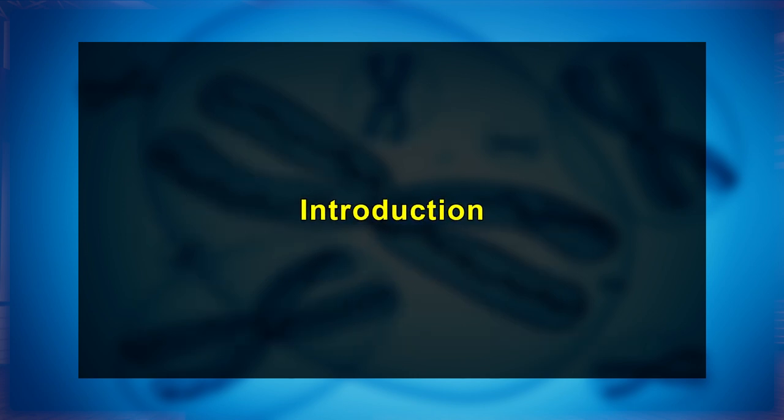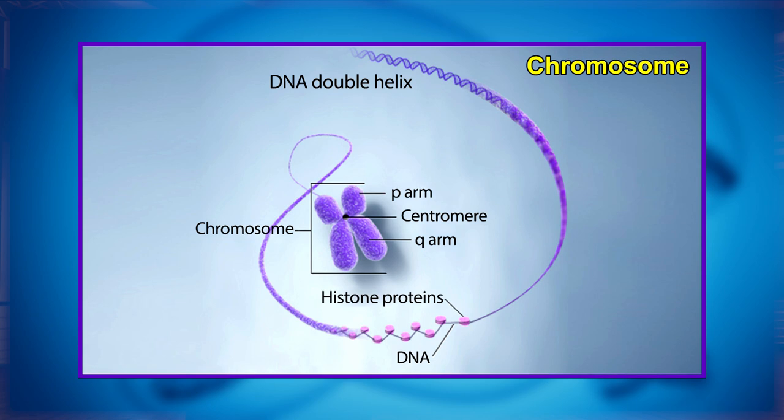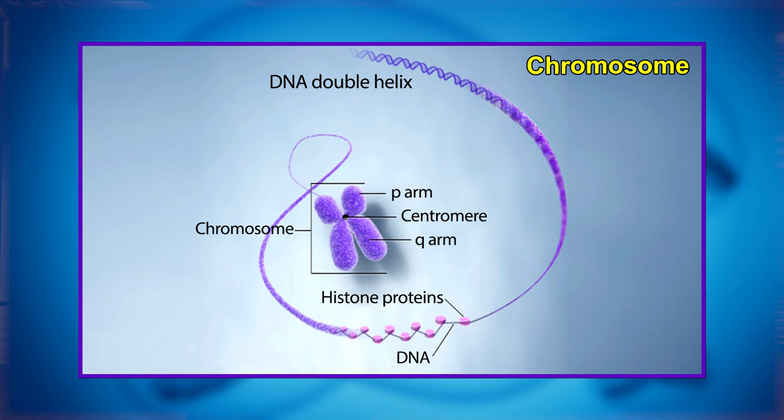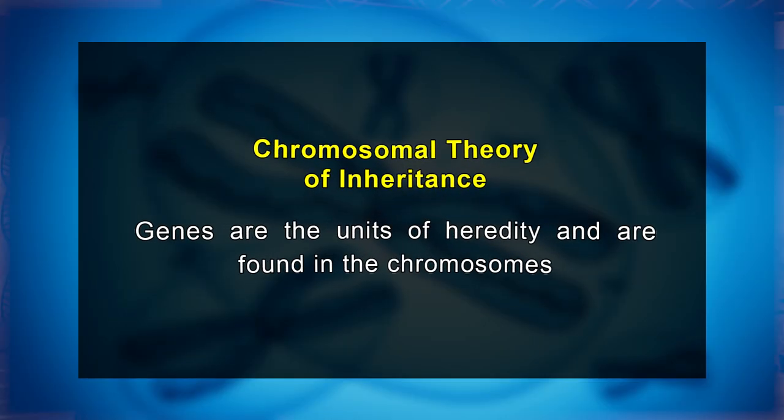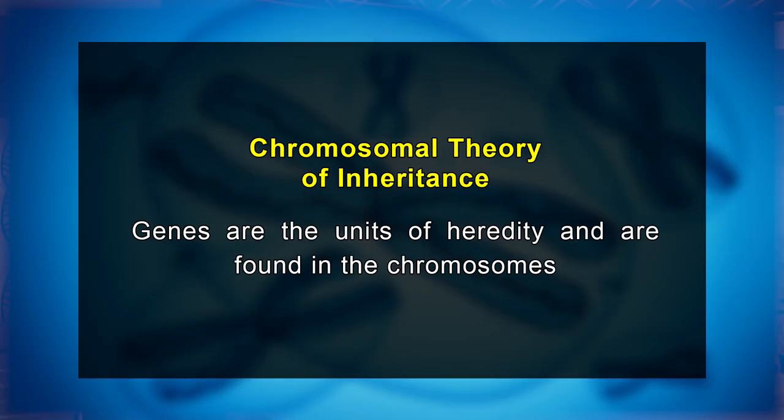Let's start with the introduction. Chromosomes are thread-like structures of nucleic acids and proteins located within the nucleus of living cells, mainly involved in carrying genetic information in the form of genes. The chromosomal theory of inheritance was given by Bowery and Sutton in the early 1900s. It is the fundamental theory of genetics. According to this theory, genes are the units of heredity and are found in chromosomes. The chromosomal theory of inheritance came into existence long after Mendelian genetics.